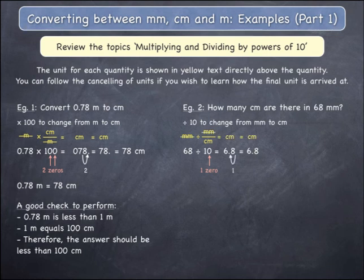The units of millimetres cancel, leaving only centimetres which becomes a final unit. 68 millimetres equals 6.8 centimetres.